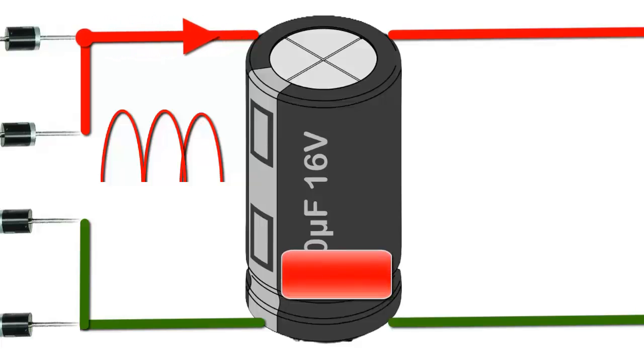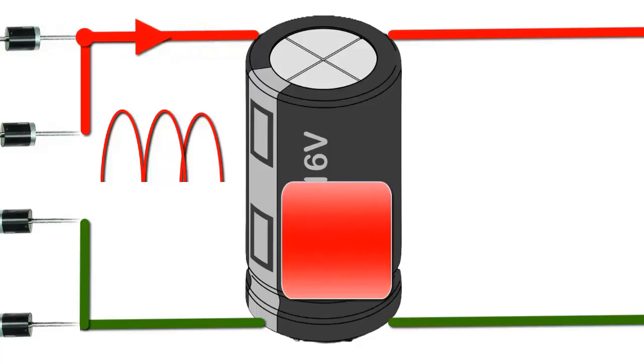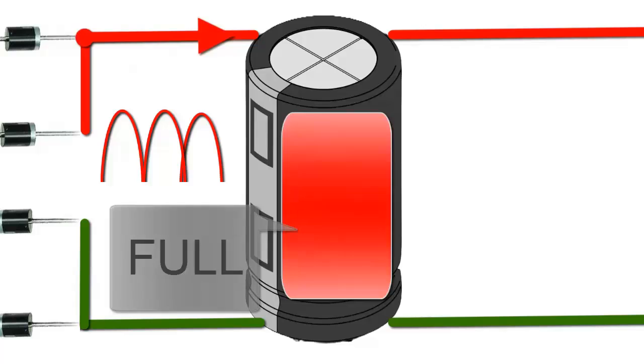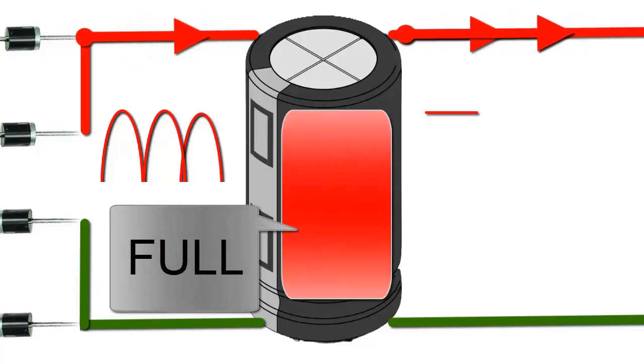Capacitors on the electronic boards of air conditioners and refrigerators are components that store and release electrical energy for various purposes such as voltage stabilization, signal filtering, and elimination of electrical noise.